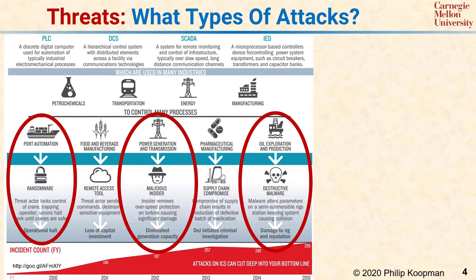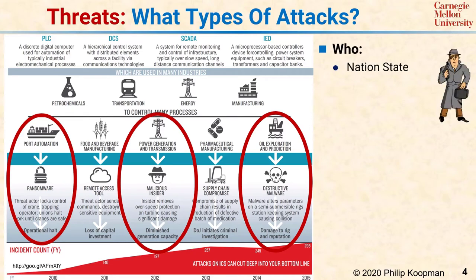When considering threats, there are two aspects to think about. The first is: who is the threat? Usually the most difficult threats come from nation-states who have essentially unlimited resources. The next type of malicious actor is often an organized group, which can include both criminal groups and activist groups of various sorts. They present a significant threat, but often do not have quite the unlimited resources of a nation-state.